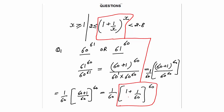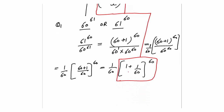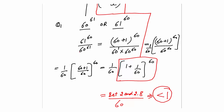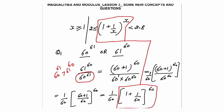Now (1 + 1/60)^60 lies between 2 and 2.8. So the entire fraction is between 2/60 and 2.8/60. Even the maximum value of 2.8/60 is less than 1, so the fraction is less than 1. This means the denominator 60^61 is larger than 61^60. Therefore, 60^61 is greater than 61^60.